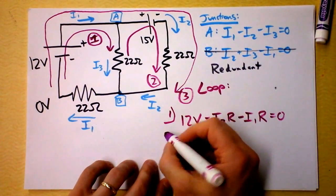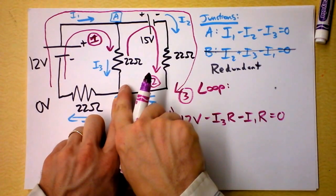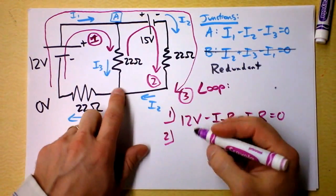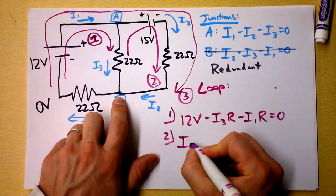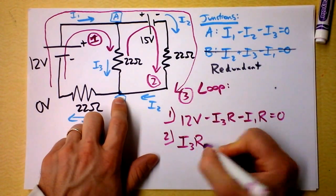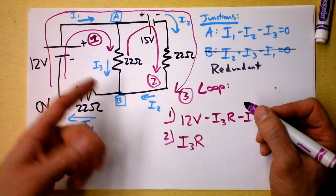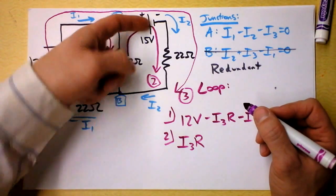All that stuff has to equal 0 in loop 2. I start from this point. And I say I'm going through that resistor opposite the direction of the current. So I actually get a voltage increase. According to my statement, I'm going to have to get I3 times R. And it's positive because I'm going the wrong way through the resistor. So it's not a voltage drop. It's a voltage rise. Here,